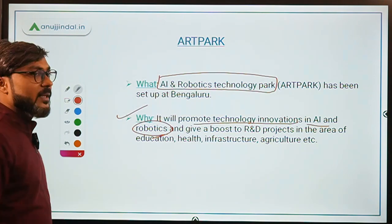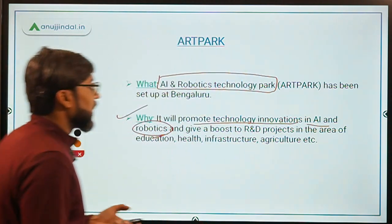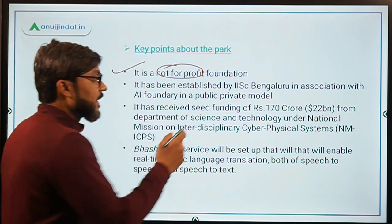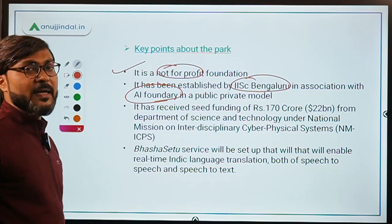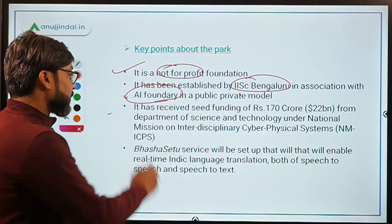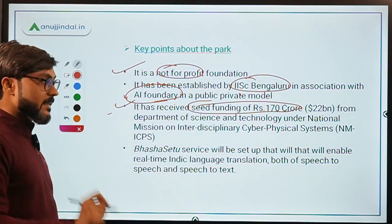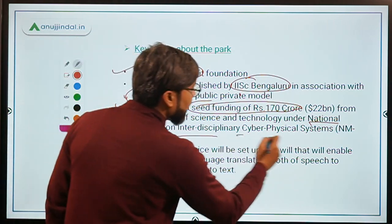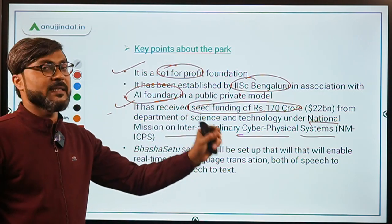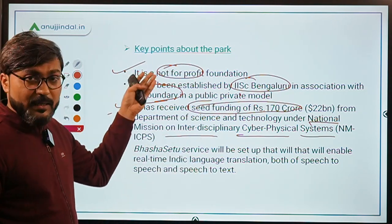ART Park will be a not-for-profit foundation established by IISC Bengaluru in association with a foundation known as AI Foundry. It has received seed funding of Rs. 170 crore, approximately 22 billion dollars, from the Department of Science and Technology under a mission known as the National Mission on Interdisciplinary Cyber-Physical System, or NMICPS. Under this mission, Rs. 170 crore has been allocated to ART Park.